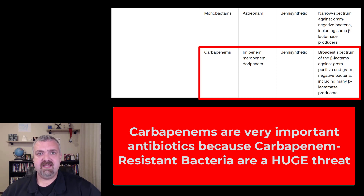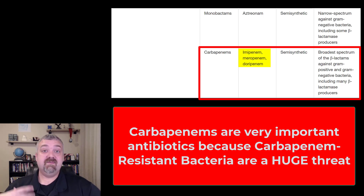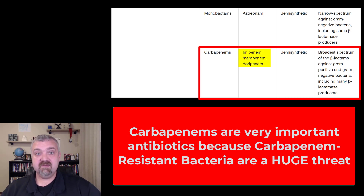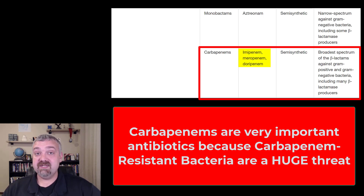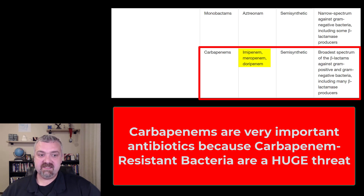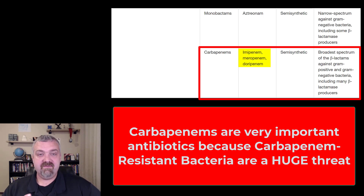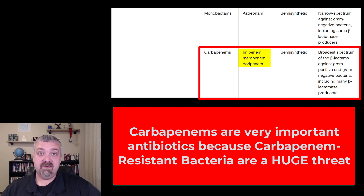There are a variety of different semi-synthetic carbapenems. Imipenem is the one we'll talk about the most, along with meropenem and doripenem. These are very broad spectrum, which means they've been used a lot. The more broad spectrum an antibiotic is, the more likely it was to be used — especially early, if you don't know what someone has, you'd do a shotgun approach. They can be useful, but that means you're exposing so many microbes to them, forcing bacteria to evolve in their presence, and you're going to see resistance. The carbapenems do have the broadest spectrum of any of the beta-lactam antibiotics, and they are also resistant to the beta-lactamase enzymes that would destroy penicillin pretty easily.